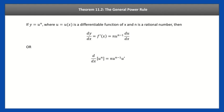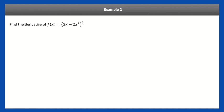Here's the general power rule. If you have u to the n, use the power rule: bring the power down, subtract one, then take the derivative of the inside — this is u prime. So the derivative of u to the n is n times u to the n minus one times the derivative of the inside. That's the general power rule: it's the power rule times the derivative of the inside, all from the chain rule.